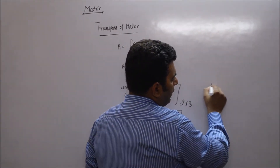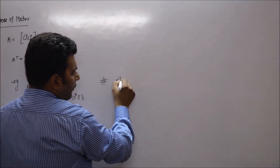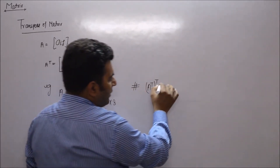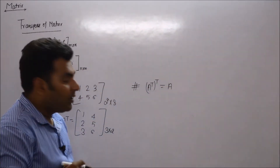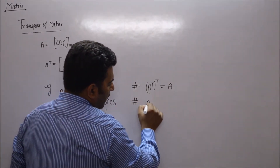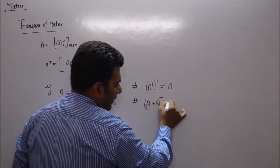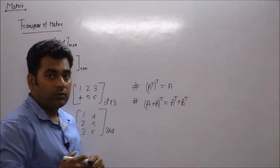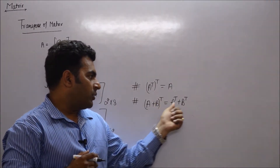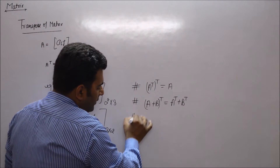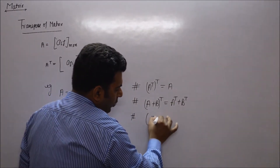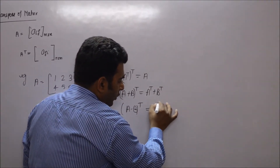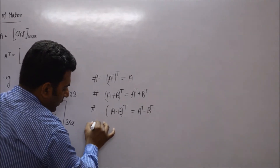Now talking about the properties of transpose: the first property is that the transpose of transpose of a matrix is the matrix itself, i.e., (Aᵀ)ᵀ = A. The second property is that the transpose of the sum of two matrices distributes on both — transpose of sum equals sum of transposes, i.e., (A + B)ᵀ = Aᵀ + Bᵀ. The third property is (A − B)ᵀ = Aᵀ − Bᵀ.